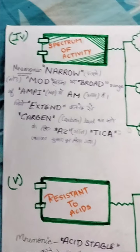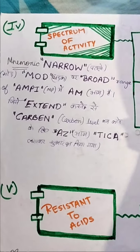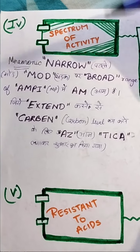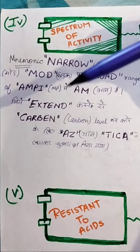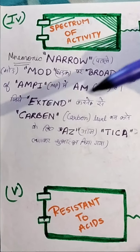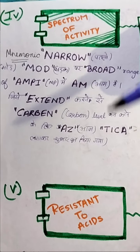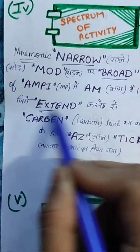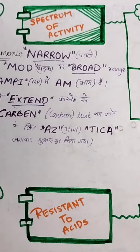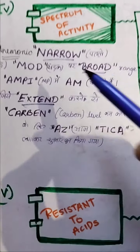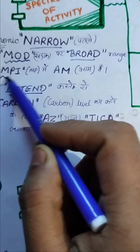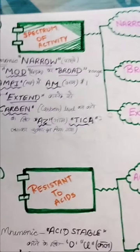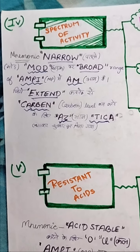To remember the spectrum: narrow is MOD, broad includes ampicillin and amoxicillin (MP), and extended includes carbencillin and related drugs. The main divisions are narrow, broad, and extended, with the drugs being MOD for narrow, MP for broad, and carbencillin group for extended. It is very easy: narrow MOD, broad range MP.